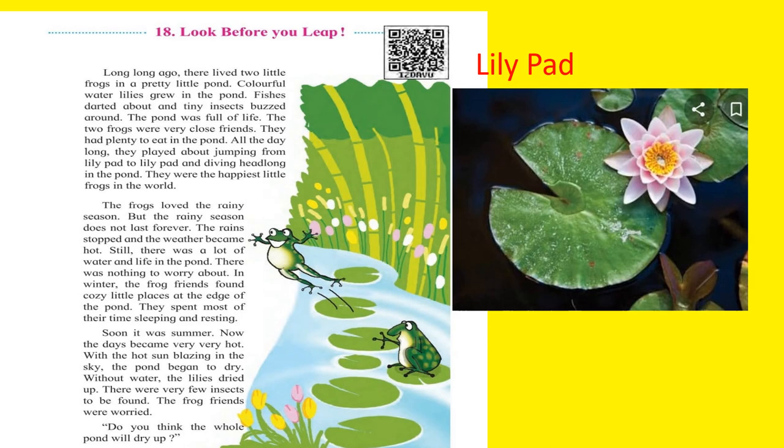In winter, the frog friends found cozy little places at the edge of the pond. When winter came, the cold season made the water cold, so from the middle of the pond they went to the edge — cozy, comfortable, warm places at the border of the pond. Frogs are animals that can live on land as well as in water. They spent most of their time sleeping and resting there. Still, there was nothing to worry about and things were really good.